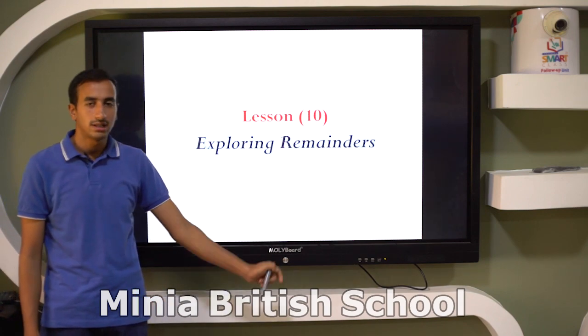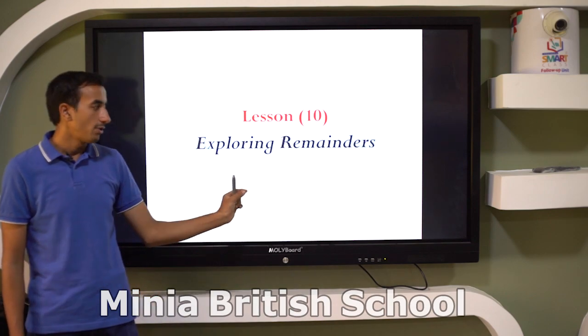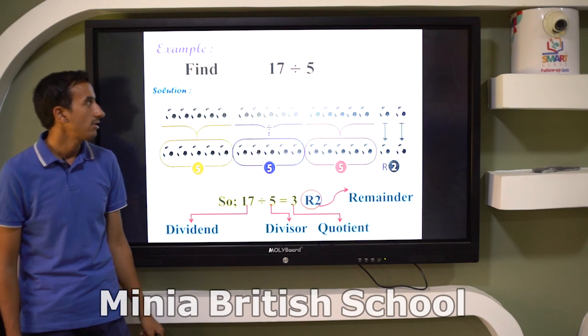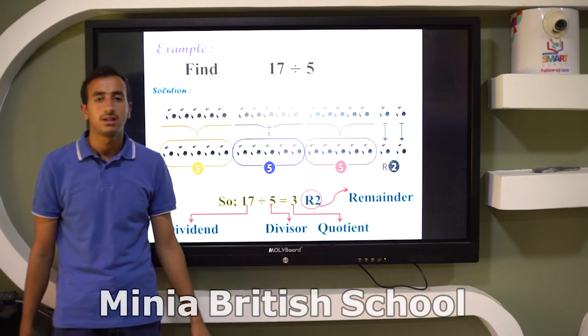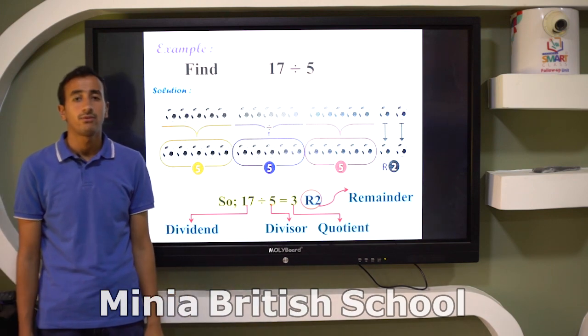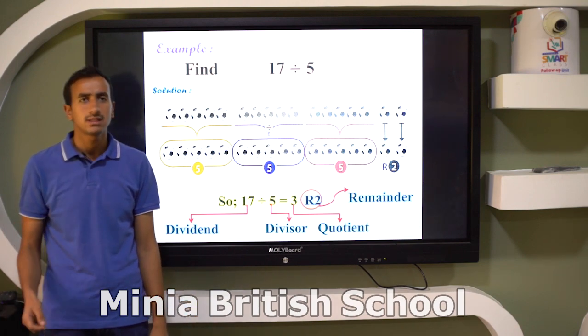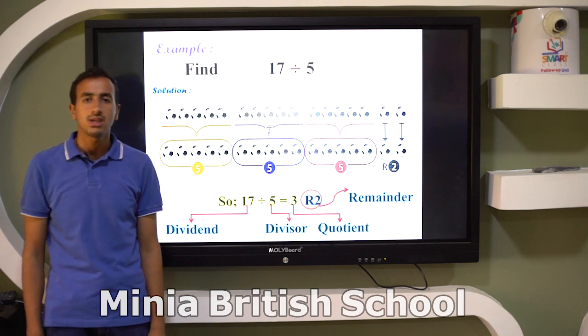It's called exploring remainders. Let's see together this example here: 17 divided by 5. We know that in grade 3, 15 divided by 5 equals 3 because 5 times 3 equals 15.